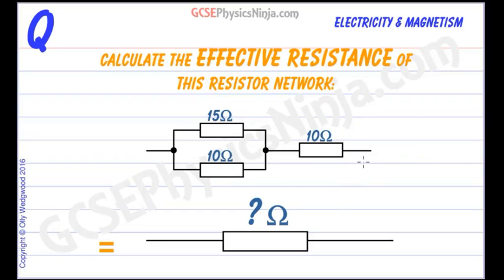Calculate the effective resistance of this resistor network. We've got two resistors that are in parallel connected to a third resistor in series. These can all be replaced by a single resistance. So how do we do this?